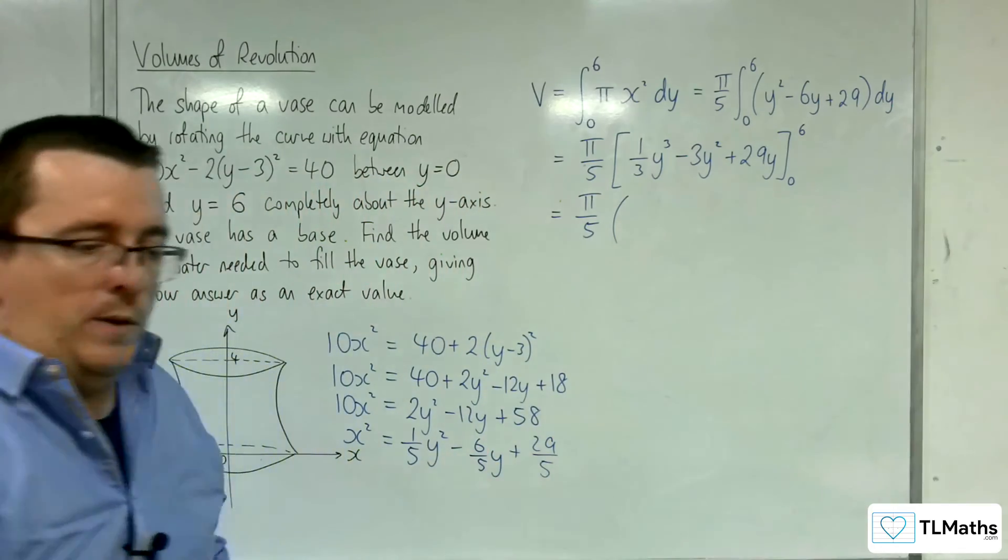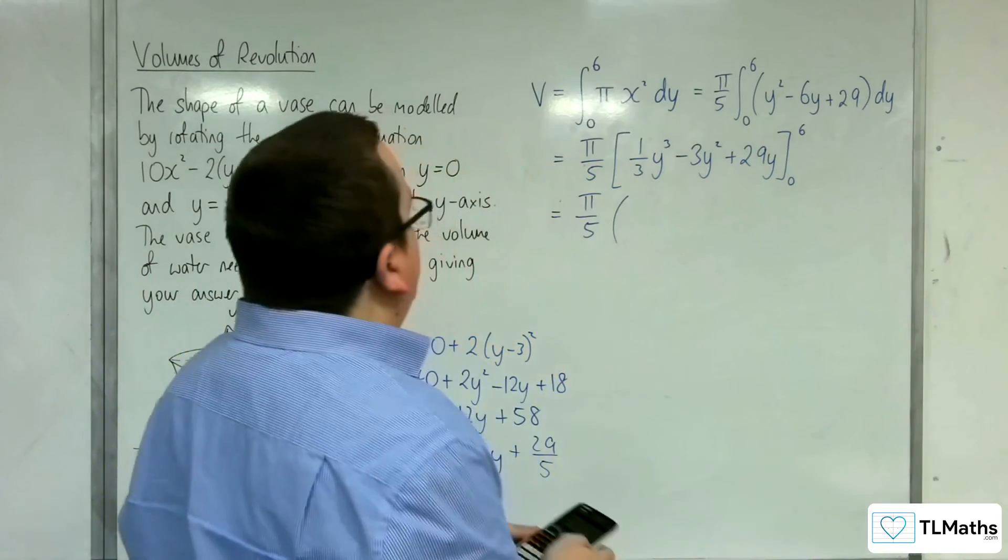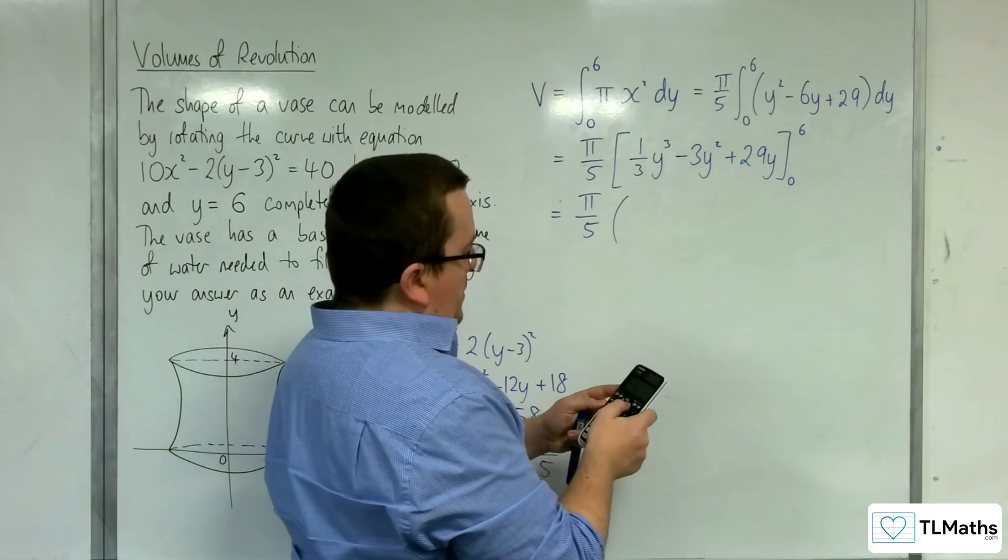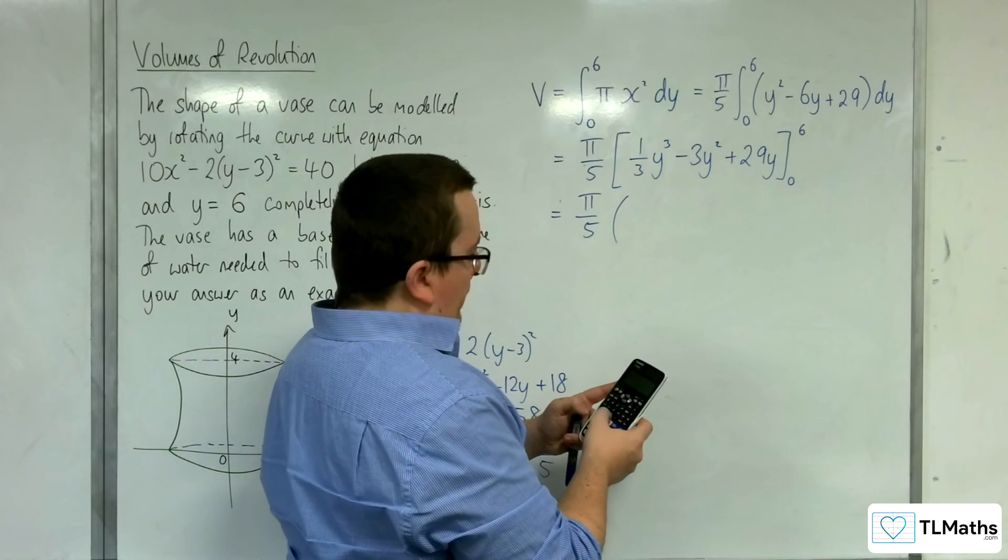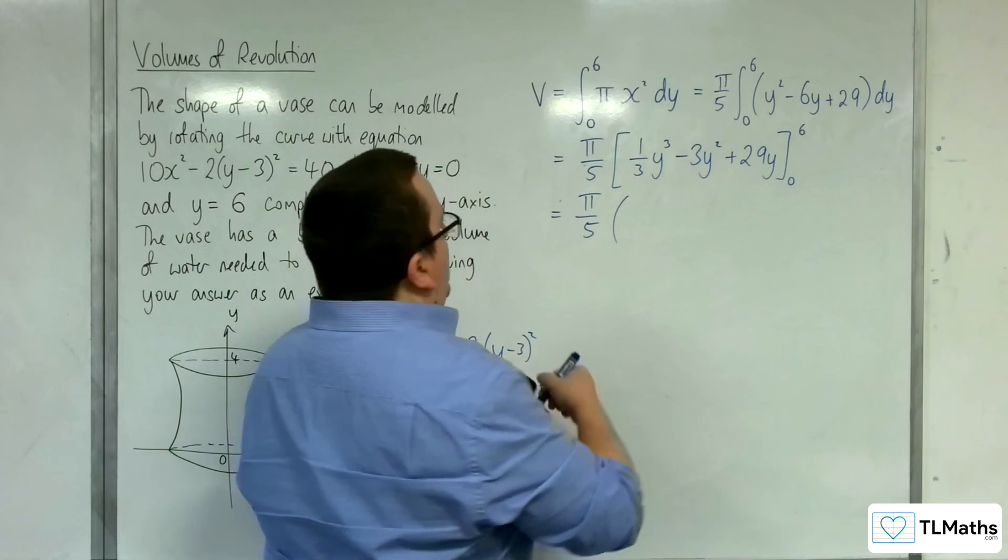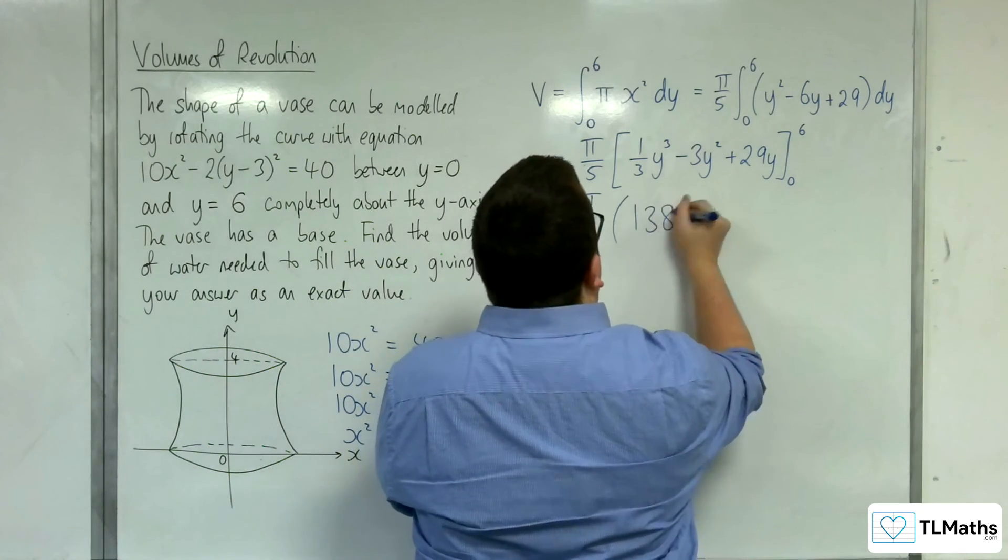So first of all, I'm going to substitute in the 6. So we've got 1/3 times 6³ - 3 lots of 6² + 29 lots of 6. And that gives us 138.